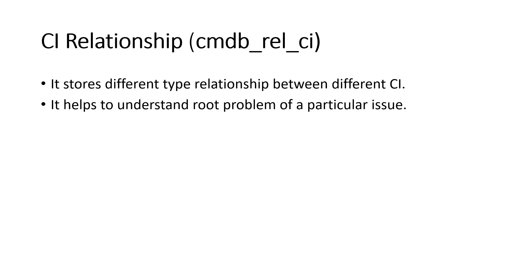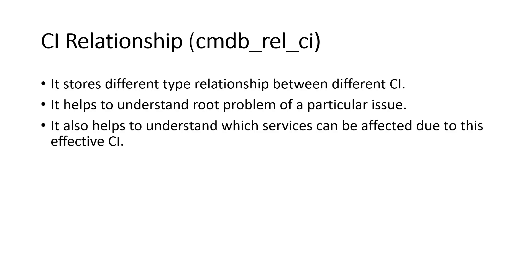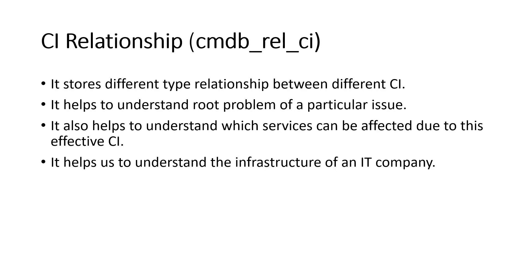CI relationships help identify the root cause of an issue — you can see which server is affected. They also show which services will be impacted if a particular CI is affected, using a schema map of CI relationships. This helps understand the full infrastructure of an IT company.